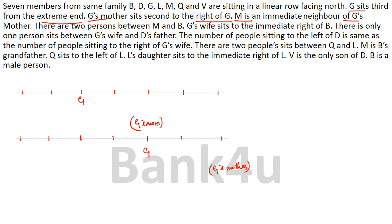Next: M is an immediate neighbor of G's mother. G's mother is placed, and the immediate neighbor positions are evaluated — M can be on either side of G's mother, giving two sub-possibilities. Then: there are two persons sitting between M and B. Working through the positions, in one case M has only one person to one side so B cannot fit, eliminating that sub-possibility. Only one valid placement remains: M is here with a gap of two, and B fits at that position.